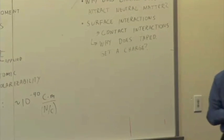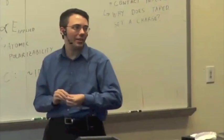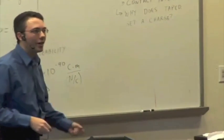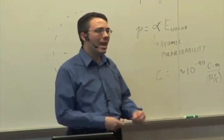And just generally speaking, why can we have a neutral object, and then some contact interaction occurs, and suddenly it has a net charge on it? Any guesses? What might be happening at the surface?